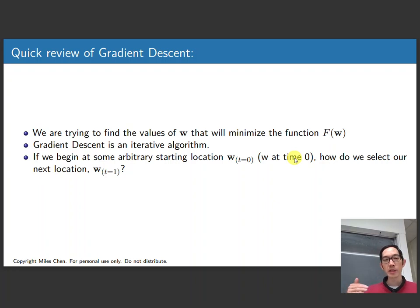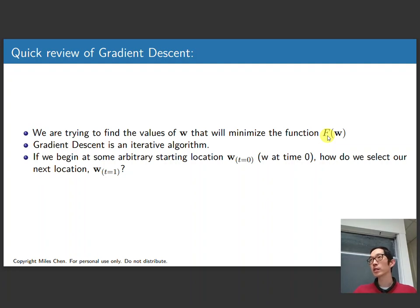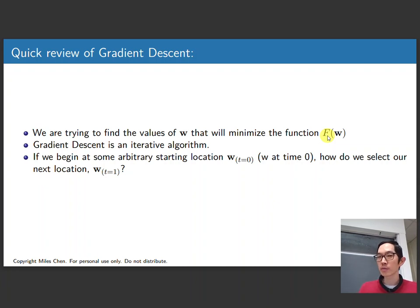Gradient descent is this iterative optimization method where we are trying to find the location where the values of some kind of vector will create the minimum value of a function. We have some function f that takes, as its argument, a vector of values, and we're trying to find whatever set of values that go into that vector that's going to minimize that thing. The way gradient descent works is you start at some arbitrary location, it doesn't really matter where, and you calculate the gradient, and you take a step in the opposite direction of the gradient.